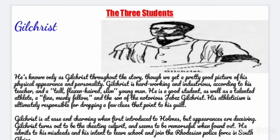Now let's meet the three students. First is Gilchrist. He is known only as Gilchrist throughout the story. He is hardworking and industrious, according to his teacher, and a tall, flaxen-haired, slim young man. He is a good student as well as a talented athlete, a fine, manly fellow and the son of Jabez Gilchrist. His athleticism is ultimately responsible for dropping a few clues that point to his guilt. Gilchrist turns out to be the cheating culprit and seems to be remorseful when found out. He admits his misdeeds and has his intent to leave school and join the police force in South Africa.